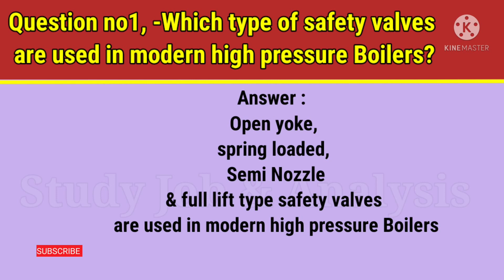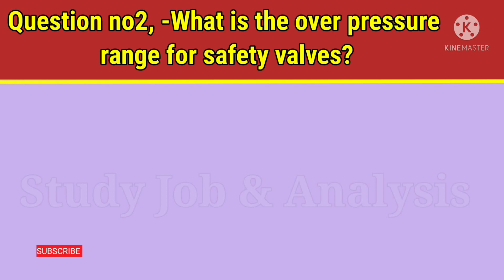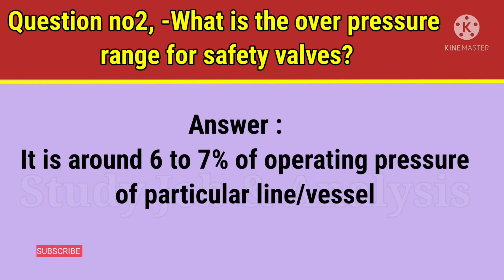Question number 2: What is the overpressure range for safety valves? Answer: It is around 6-7% of the operating pressure of the particular line or vessel.